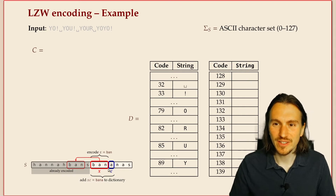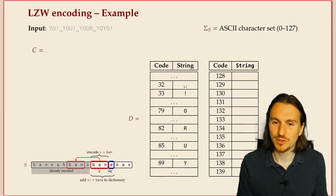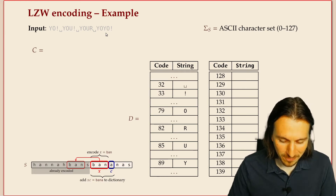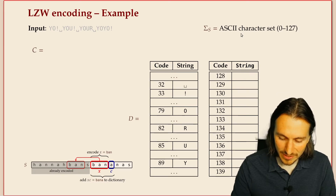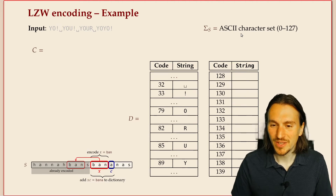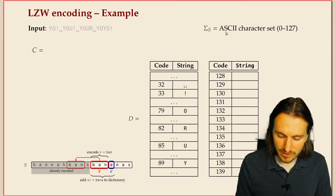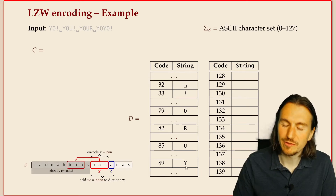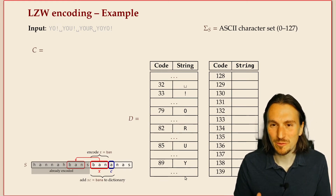On an example: the longest string currently in your dictionary that you find at the current position is the one you select. Here's our input: 'yo you your yo yo'. We'll build the coded text one by one. I'll assume the full ASCII character set as the alphabet, giving a more realistic feel for how big the dictionary gets. The first part of our dictionary is already filled with all individual characters.